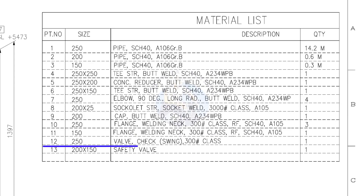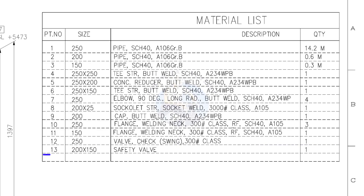Item number 12: 250 NB, check valve, swing type, class 300 pound. Quantity: 1. Item number 13: 200 into 150, safety valve. Quantity: 1 number.